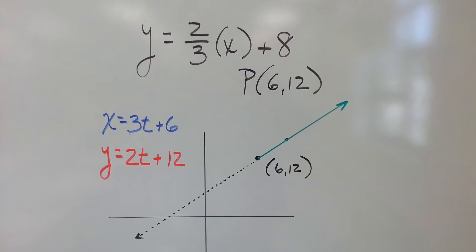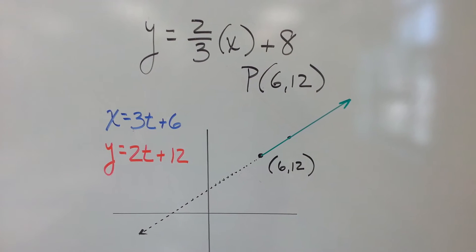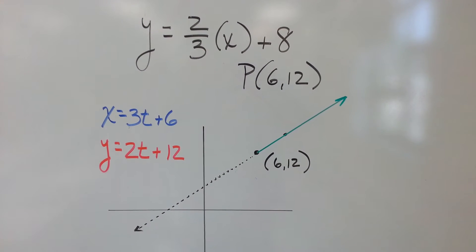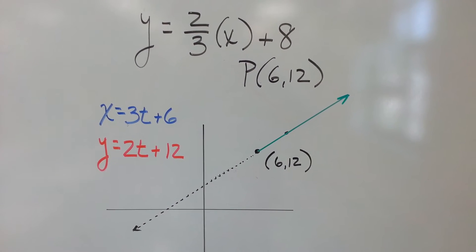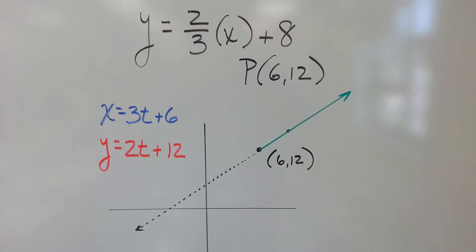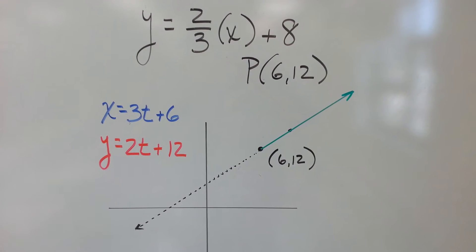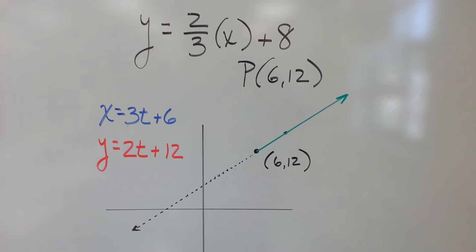That line, we want to turn that into parametric equations, and here's all you do. The instructions say, you've got this line, y = 2/3x + 8, and we want to see what goes on with that line, starting at the point (6,12).